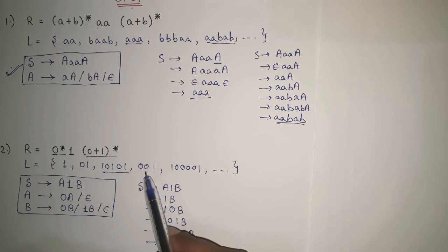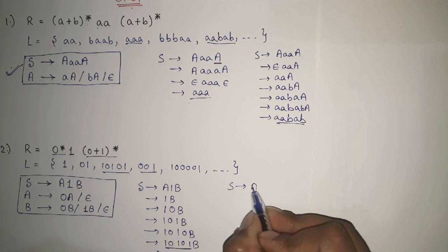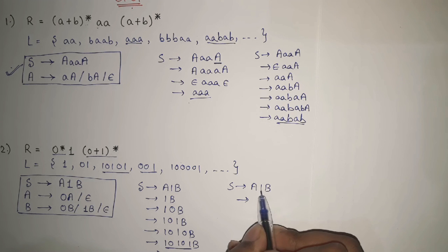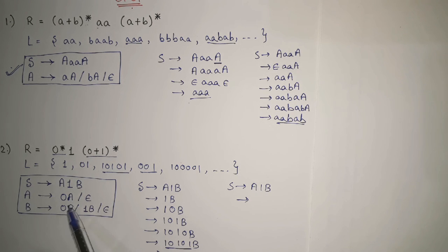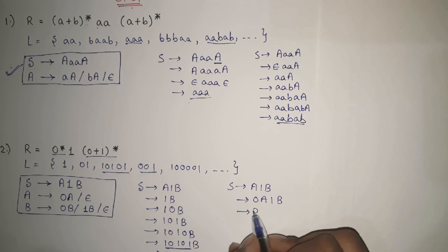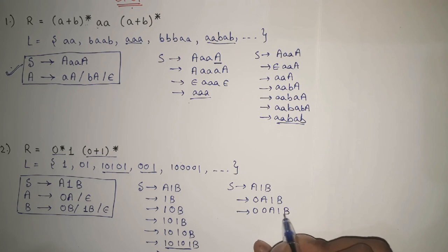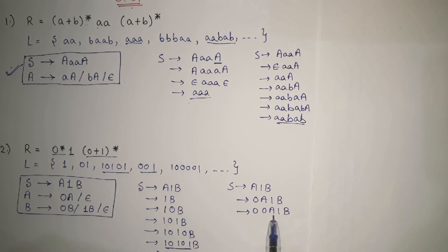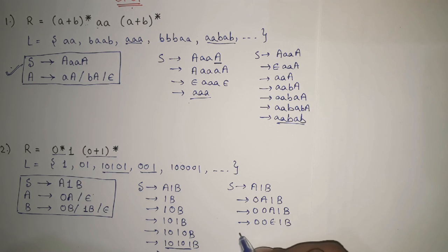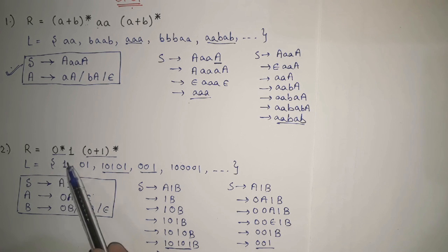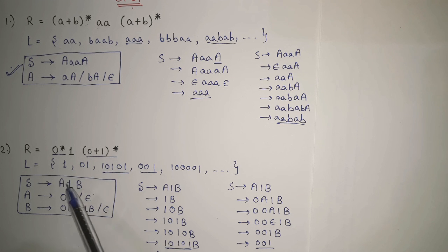Let's also derive '001'. Starting with S → A 1 B. I replace A → 0A, then again A → 0A, giving '0 0 A 1 B'. Now '00' is there and '1' is there. I replace this A with null and B with null, giving '001'. And to generate just '1', start with S → A 1 B, replace A with null and B with null, leaving only '1'. So it is generated.